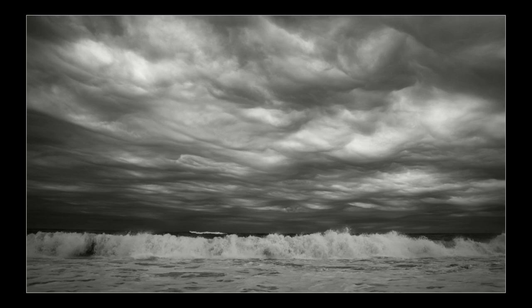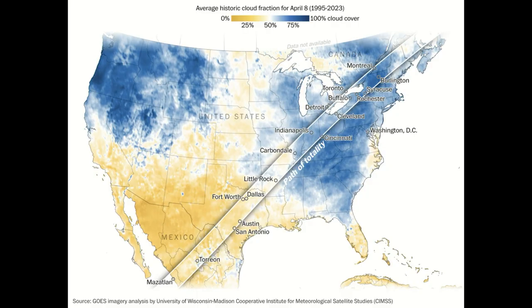Even when the moon is 99% eclipsed, as it will be very close to the path a little bit north of Concord but not far enough north to be in the path of totality, it only is about as dark as an overcast day. It's still daylight.